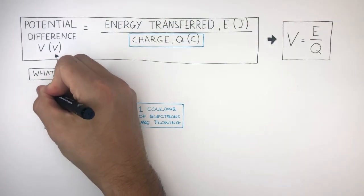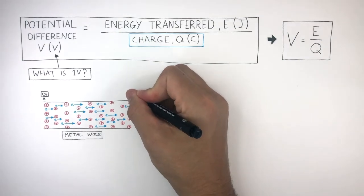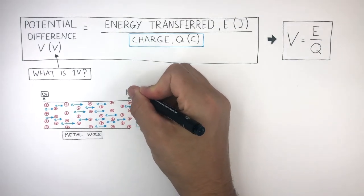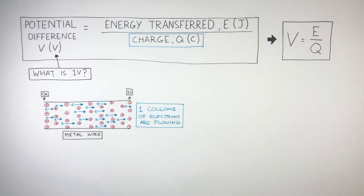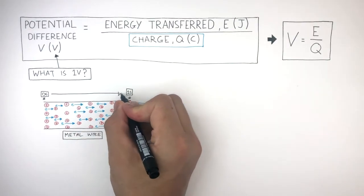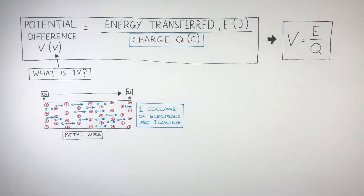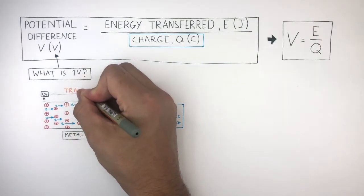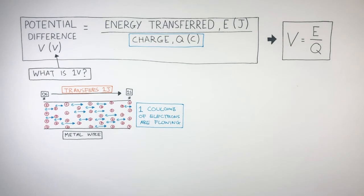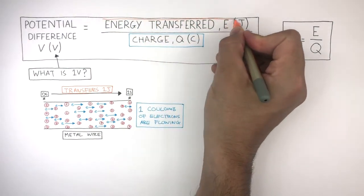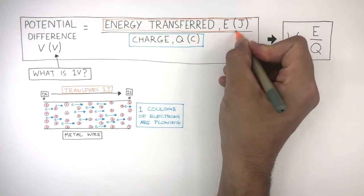On this diagram, this point represents 0 seconds and this point represents 1 second. So in 1 second, 1 coulomb of electrons have transferred 1 joule of electrical energy.